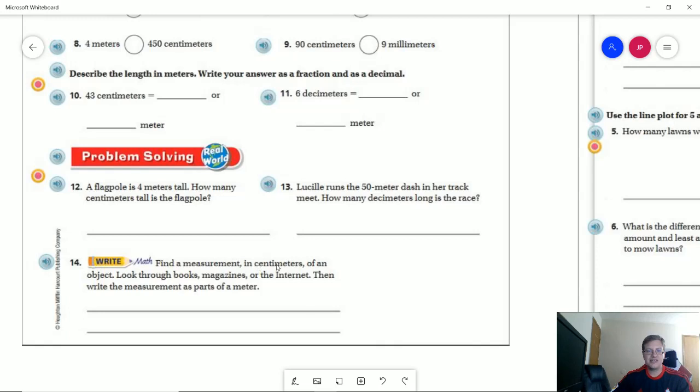So it says, find a measurement in centimeters of an object. It can be whatever you want. However, make sure that you can actually find the value. So it suggests looking through books, magazines, or on the internet. So if you don't know, let's say I want to use my trombone practice mute, or warm-up mute, and I wanted to find the length of this in centimeters, I'm probably going to have to go online and look up this particular model of by the company that made it to figure out what the measurement is. So that's what that means. It doesn't mean that you have to use a book, or use a magazine, or use the internet. If you already know the measurement, you don't need to worry about that part.